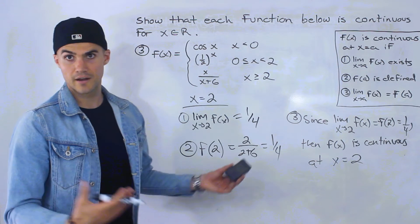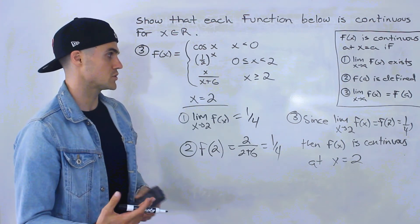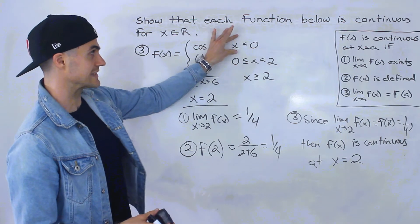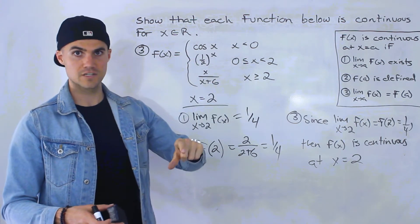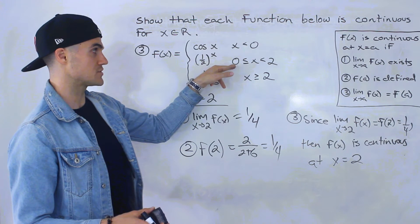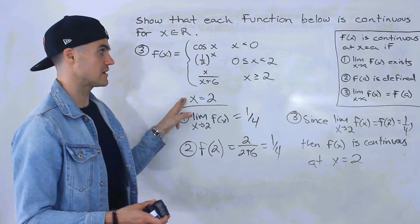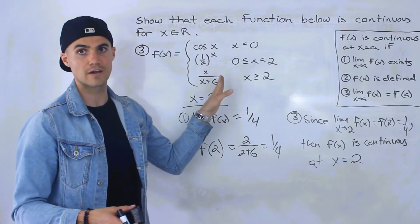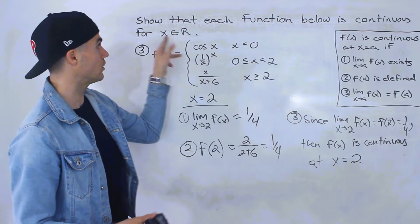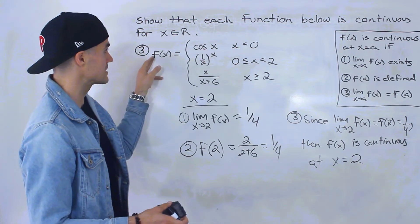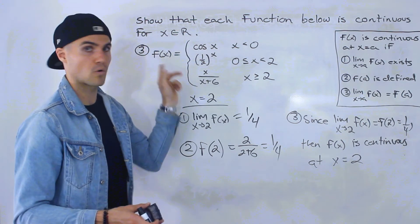So we are done for this piecewise function. We showed that it's continuous for x values less than zero, at x = 0, between x = 0 and x = 2, at x = 2, and for x values greater than two. Since we've shown it for all x∈ℝ, this piecewise function is continuous for all x∈ℝ.